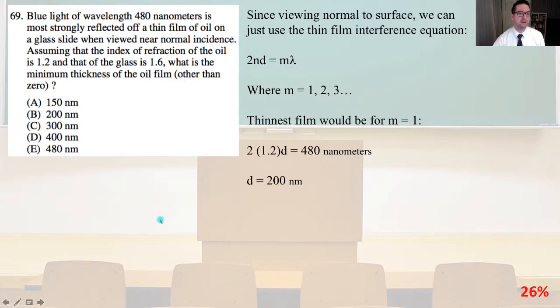Number 69, blue light of wavelength 480 nanometers is most strongly reflected off a thin film of oil on a glass slide when viewed near normal incidence. Assuming that the index of refraction of the oil is 1.2 and that of the glass is 1.6, what is the minimum thickness of the oil film other than zero? Since we're viewing normal to the surface, we can just use the thin film interference equation, where 2nd equals mλ, where m equals 1, 2, 3, dot dot dot.